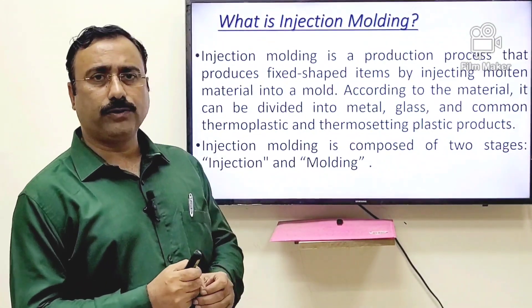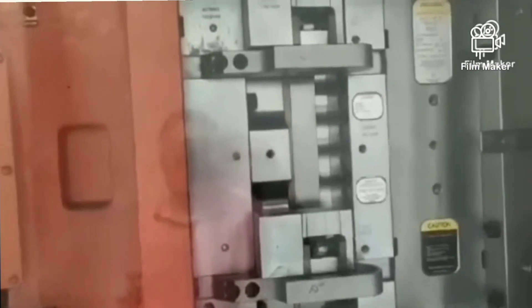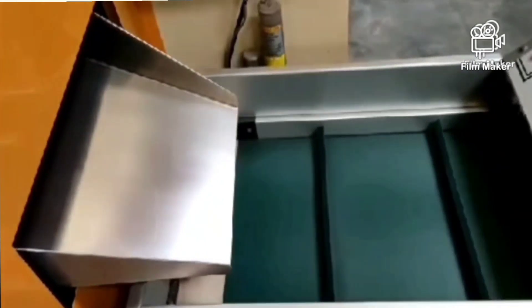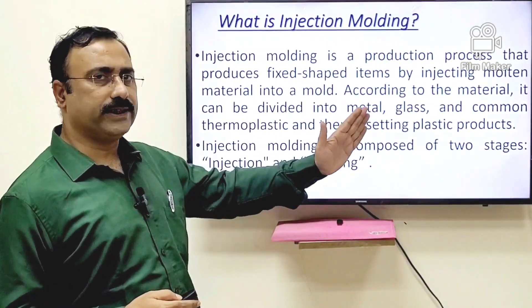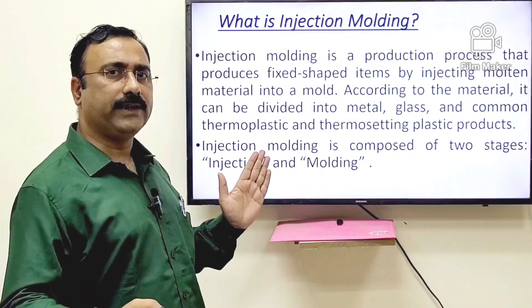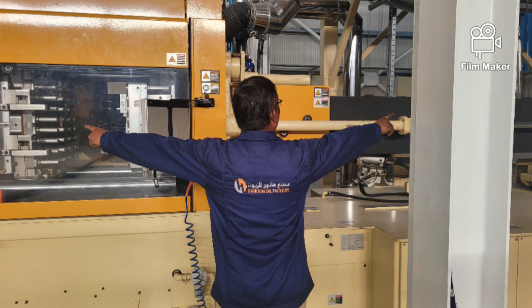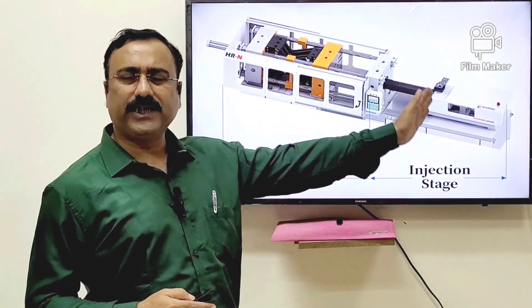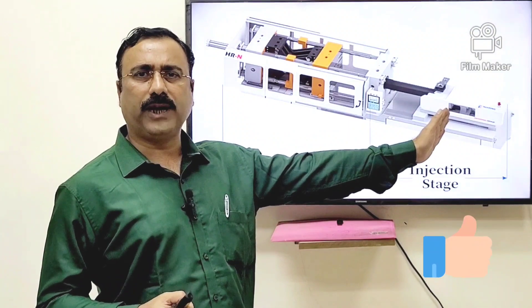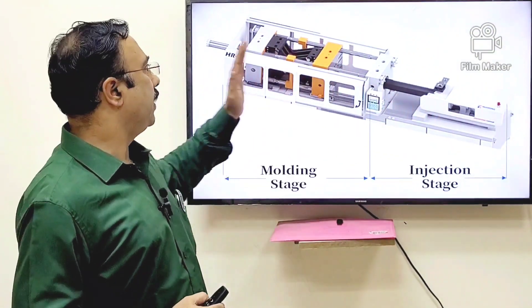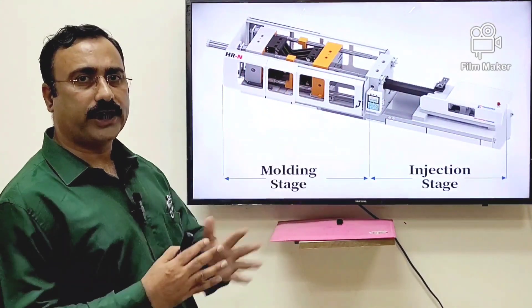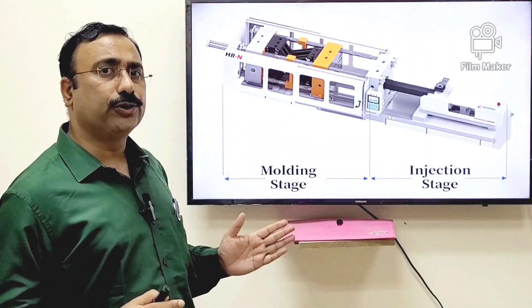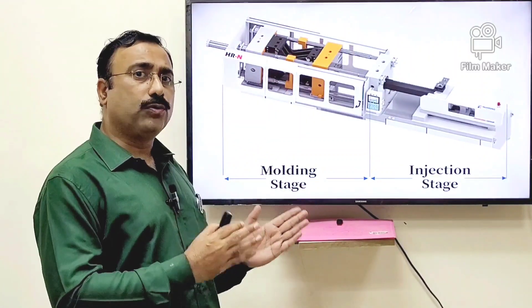Before going into detail, we need to understand what injection molding is. Injection molding is a procedure where a molten material is compressed and then injected into a cold mold where it takes shape and then ejects out. In injection molding there are two stages: the first stage, on the right side of the machine when you stand in front of it, is called the injection stage, and the other side is called the molding or clamping stage. The tonnage of the machine determines how much force is required to keep the mold closed while the injected material cools and takes its shape.